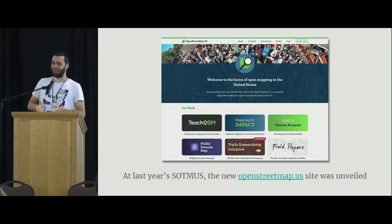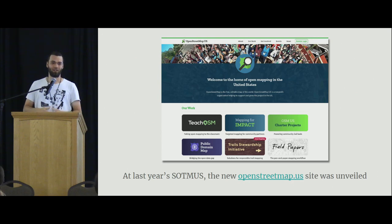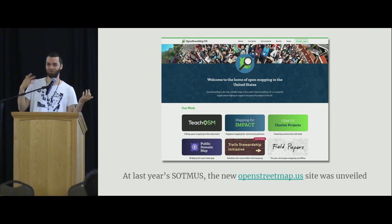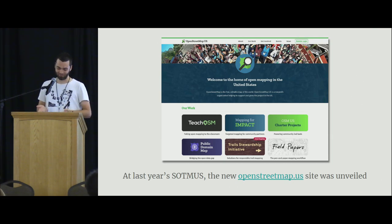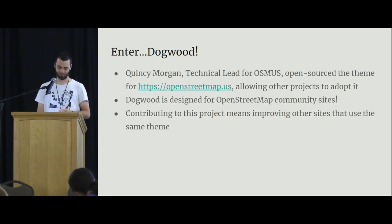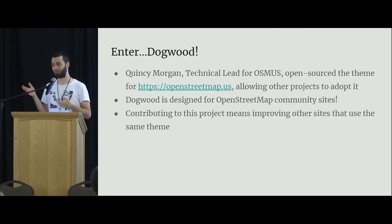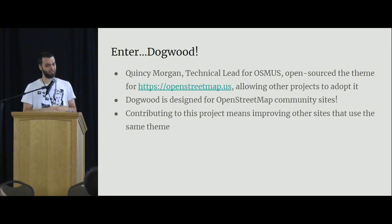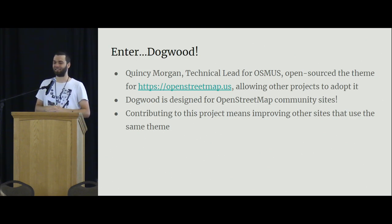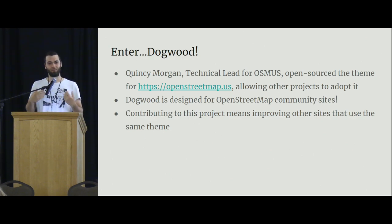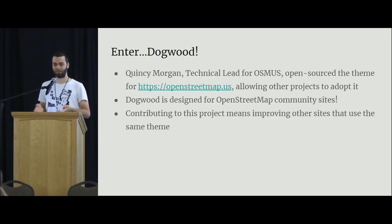I immediately thought to myself, wow, that would be really cool to use for my own projects — it would be really nice if we could get this kind of quality of website for other communities. Quincy sort of answered that question without even me asking it and released Dogwood. Basically, Dogwood is the code, or at least most of the code, behind that website, and it's now available for everyone to use on GitHub. It's designed exactly for what we need it for, for these community sites. I'm also really excited about the idea that as people contribute to Dogwood, they're also contributing to make all of the other community sites work better as well.